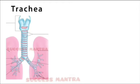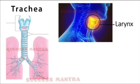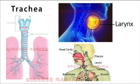The trachea, also called the windpipe, connects the larynx to the lungs, allowing the passage of air. The larynx is called the voice box — it is an organ at the top of the neck involved in breathing, production of speech sounds, and protecting the trachea against food aspiration.